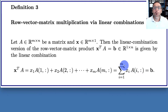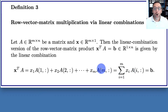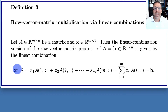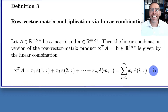This definition is analogous to the linear combination version of matrix column-vector multiplication. Two major differences: one, we're using the rows of A rather than the columns; and two, x appears on the left-hand side with the transpose so that inner dimensions agree. Specifically, x^T is 1×m, A is m×n, and the output vector b is 1×n.